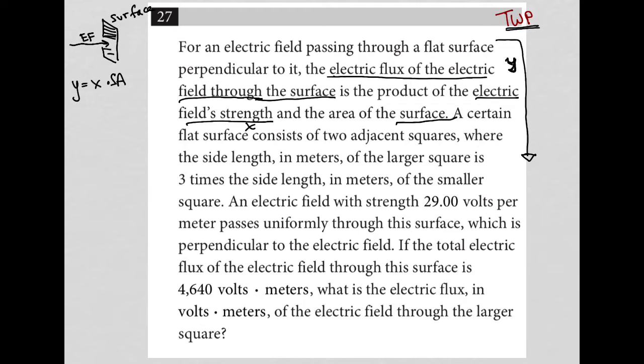The next sentence says, a certain flat surface consists of two adjacent squares, where the side length in meters of the larger square is three times the side length in meters of the smaller square. Okay, well, I can draw that. So I have small square. I have larger square. And it says that the side lengths of the larger square are three times the side lengths of the smaller square. All right. So that's labeled.